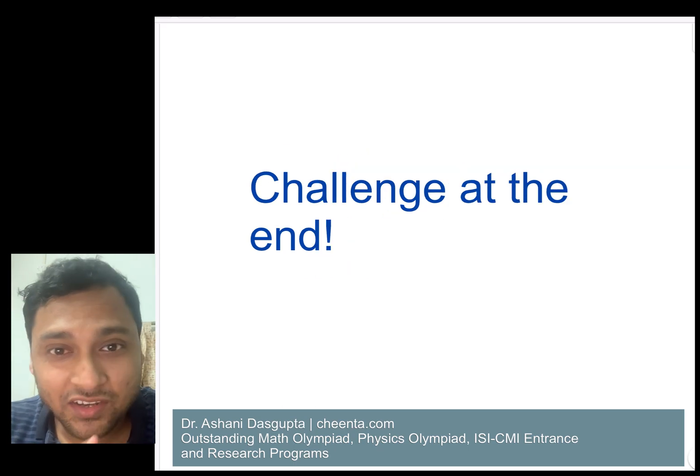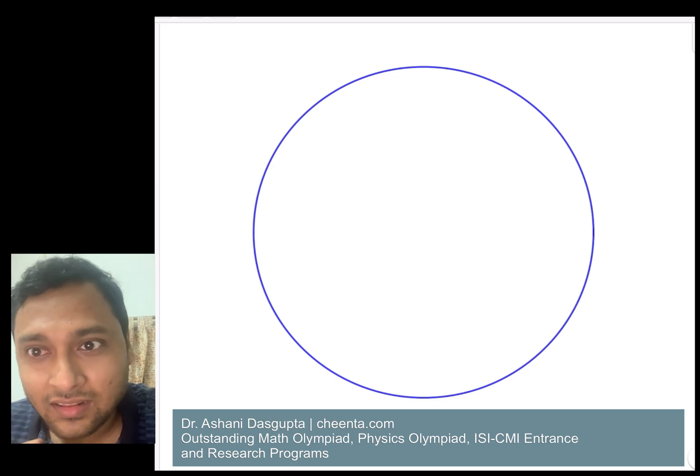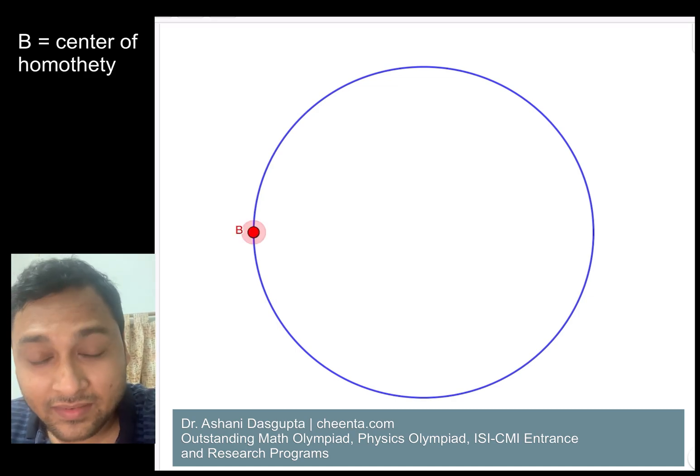Okay, so we start with the circle. This is a blue circle and we have a point on that circle - let's say point B. This is a super important point. This point will be known as the center of homothety eventually.